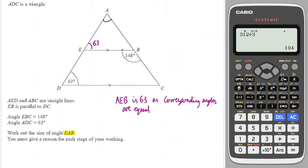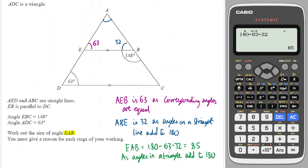And the next one I will do is this angle in here which we will get by doing 180 minus 148 which is 32. And I will write that ABE is 32 as angles on a straight line add to 180. And then the final calculation I will need to do will be 180 minus 63 minus 32 and that is 85. So I can say that the angle I'm looking for EAB is equal to 180 minus 63 minus 32 which is equal to 85 as angles in a triangle add to 180. And we are done.